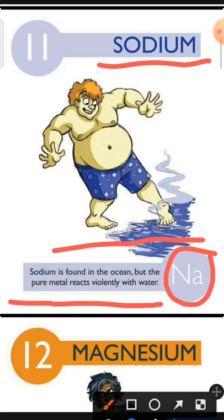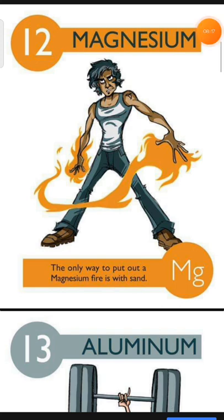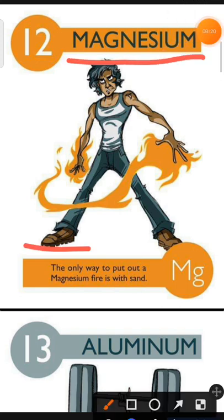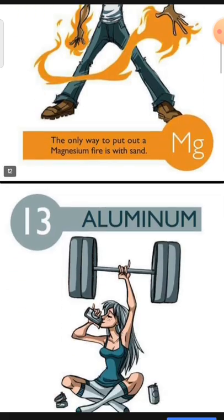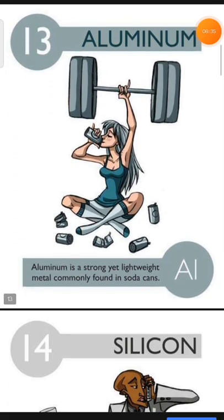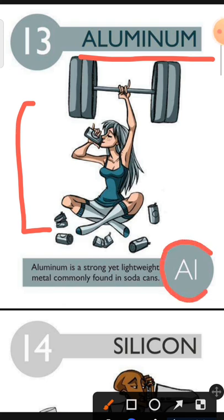Element number 12 is Magnesium. Element number 13 is Aluminium. The characteristic of Aluminium is: Aluminium is a strong yet lightweight metal commonly found in soda cans.